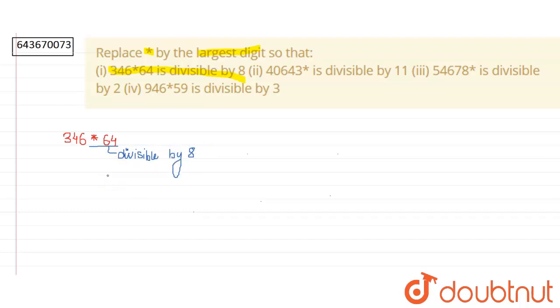We'll start by putting the highest values first. Let's first see 9 because it's the highest digit. 964 is not divisible by 8, so 9 is not the answer. If we put 8 here, 864 is divisible by 8. So the value of asterisk will be 8.